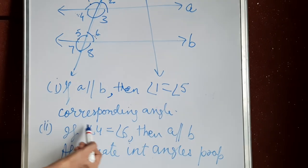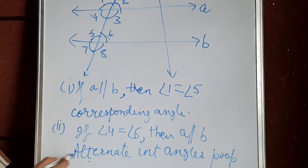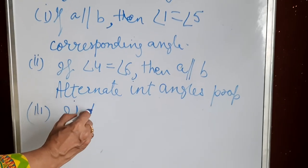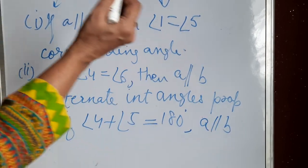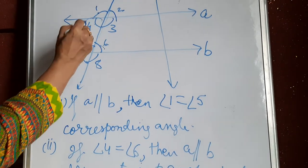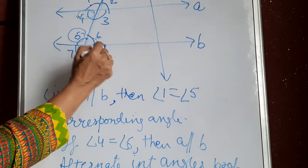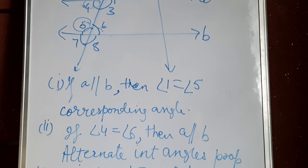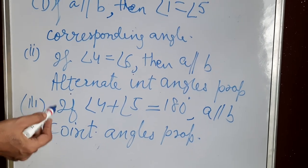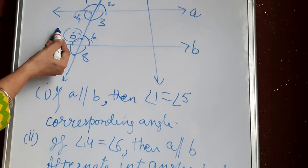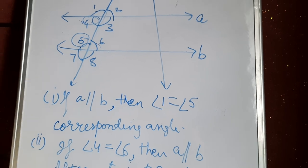Statement (iii): if the sum of angle 4 and angle 5 is 180 degrees, then A is parallel to B. These are co-interior angles, and their sum is 180 degrees, so lines are parallel. The property is the co-interior angles property, also called the sum of interior angles on the same side of the transversal property.